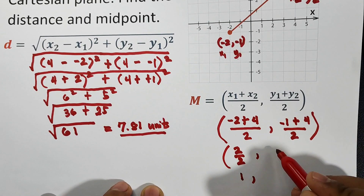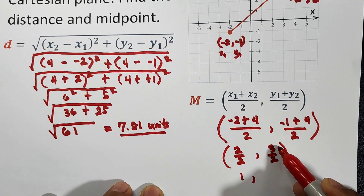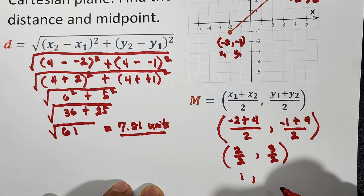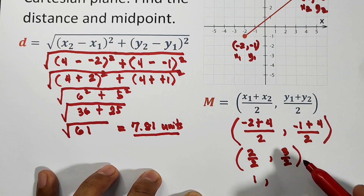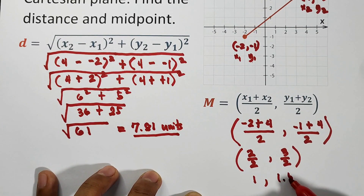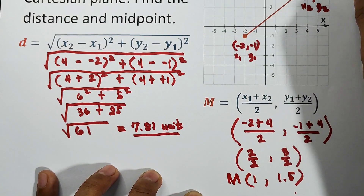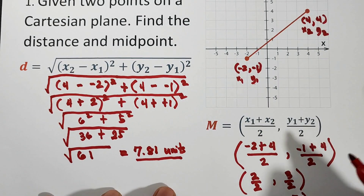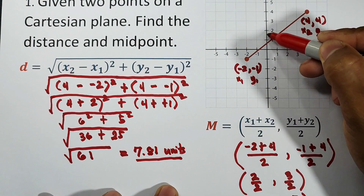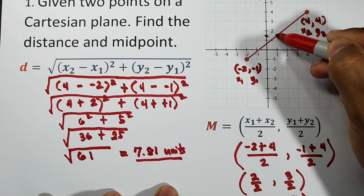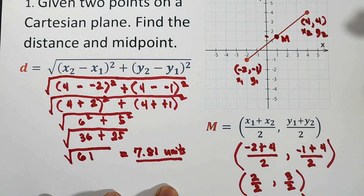Negative 1 plus 4 is 3 over 2, and 3 divided by 2 is 1.5. So the midpoint is (1, 1.5). We can find this on the Cartesian plane: x is 1 and y is 1.5, so the midpoint is at (1, 1.5).